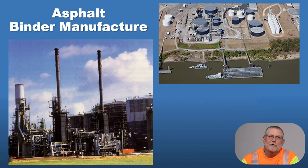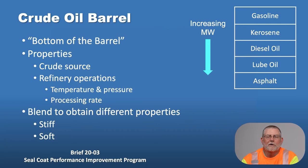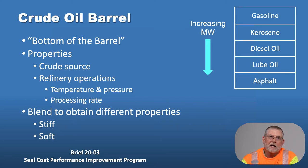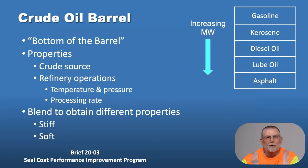All asphalt starts at a refinery or a terminal like you see pictured here. Asphalt comes from crude oil. Here in recent years, we've gotten pretty good at refining crude oil into our most valuable products, which is gasoline, kerosene, and diesel fuels. What's left is our base asphalt, which is the bottom of the barrel. Since we've gotten so good at refining this, we have to add things back to this asphalt to get the properties that we're looking for — stiffness or softness.